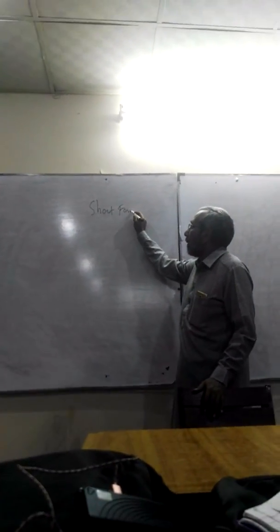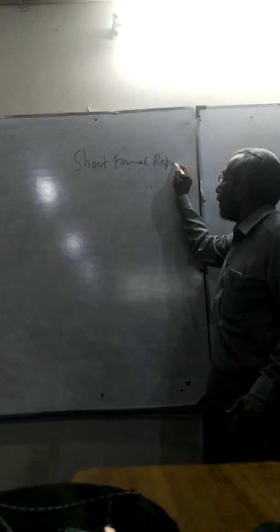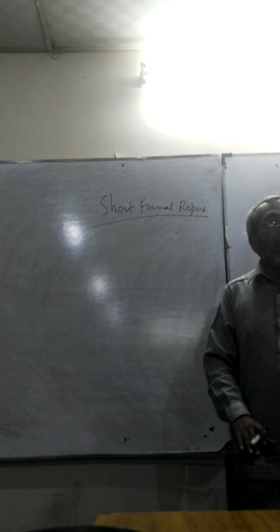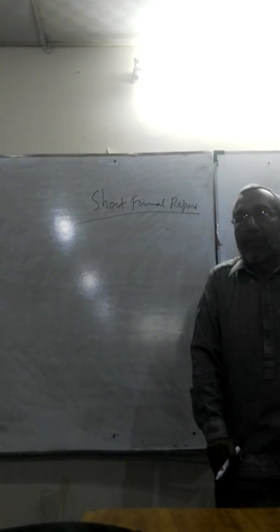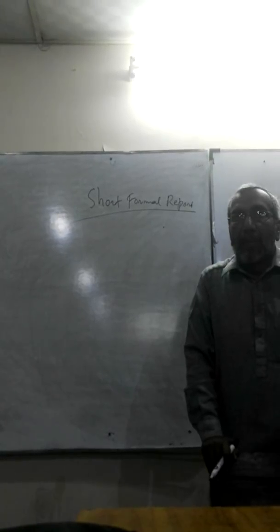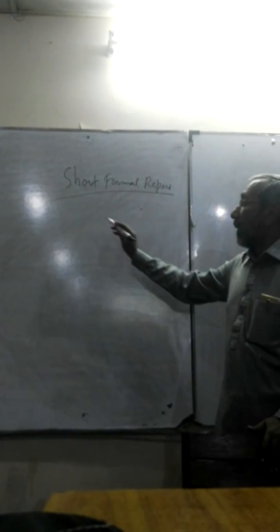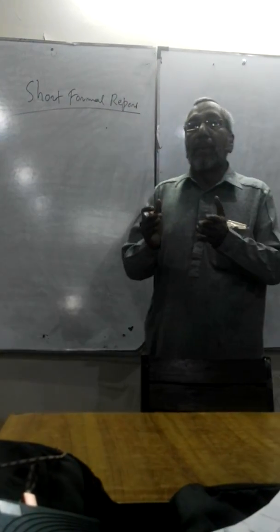Short Formal Report. As I was saying yesterday that there are 5-6 basic parts of Short Formal Report. The first was the person we are writing to. As we have said, first we will write submitted to, then we submit it.